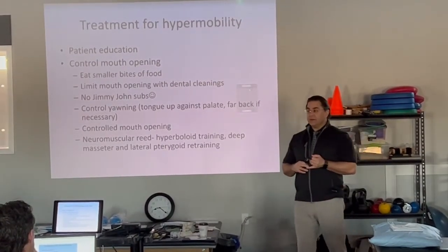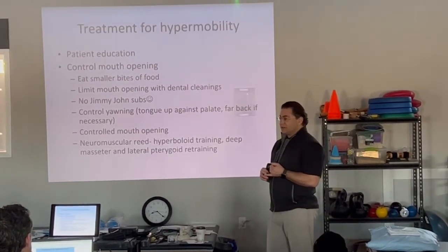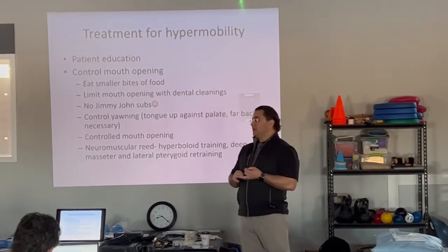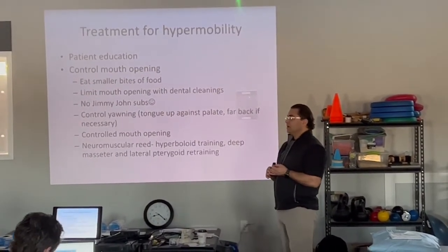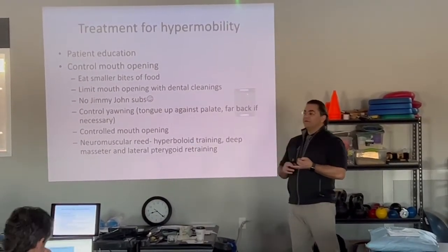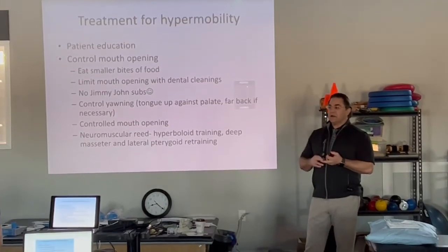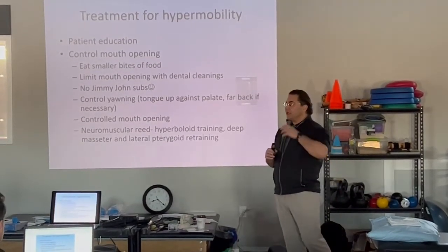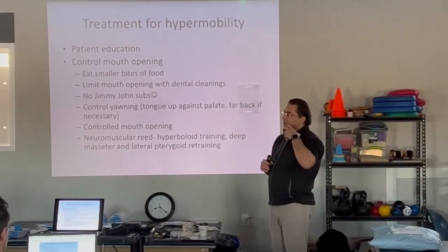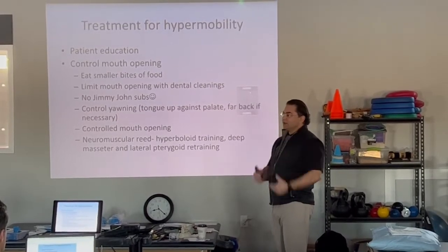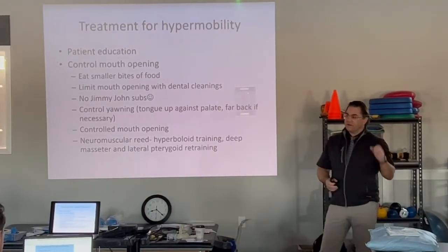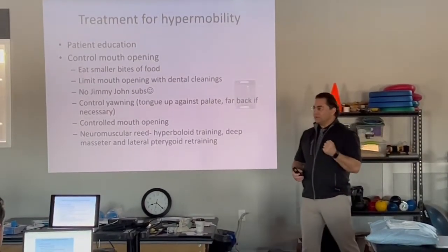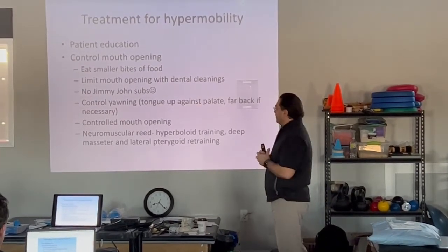Or if somebody's really seriously systemically hypermobile, they may need to just convert to applesauce. All of their vegetables need to be steamed — your carrots, your broccoli, your cauliflower. They can't afford those hard forces. Just think about other joint areas like the thumb and other parts of the body that you would want to protect. This is no different here.